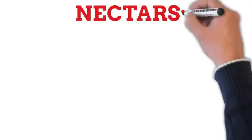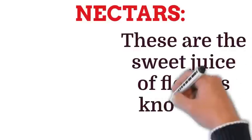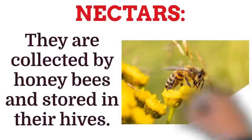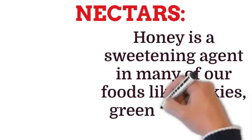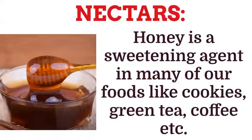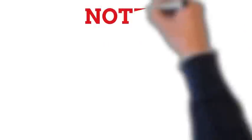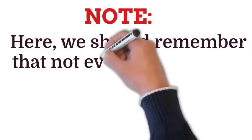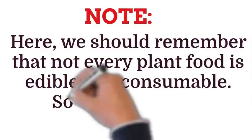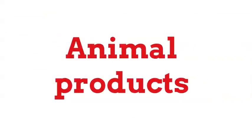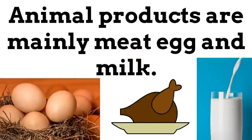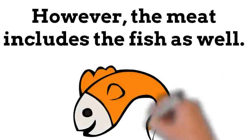Now, let's discuss nectar. The sweet juice of flowers is known as honey. It is collected by honeybees and stored in their hives. Honey is used as a sweetening agent in many foods like cookies, green tea, coffee, etc. We should remember that not every plant food is edible — some are poisonous as well. Animal products are mainly meat, egg and milk, where meat includes fish as well.